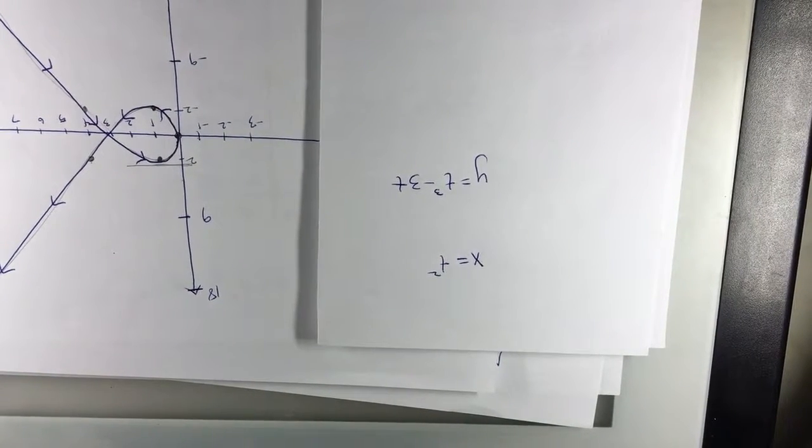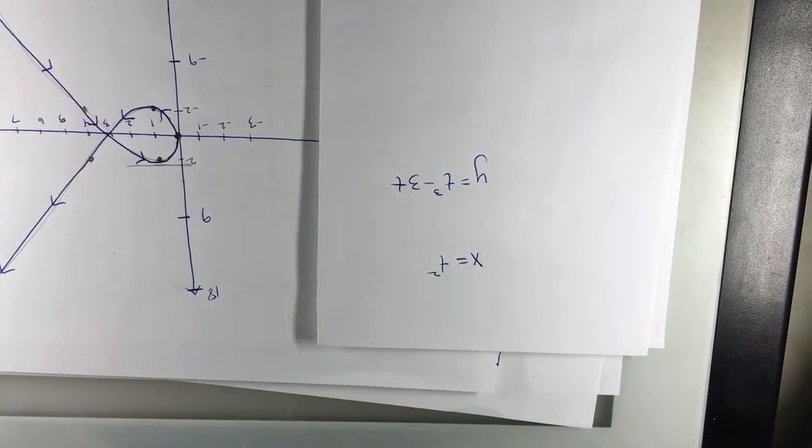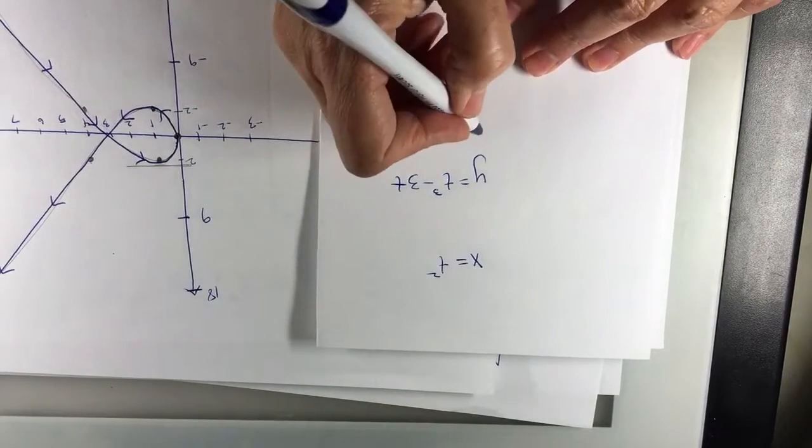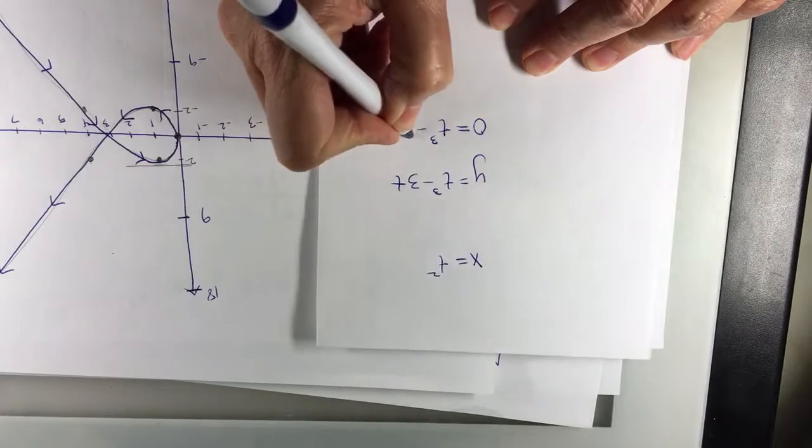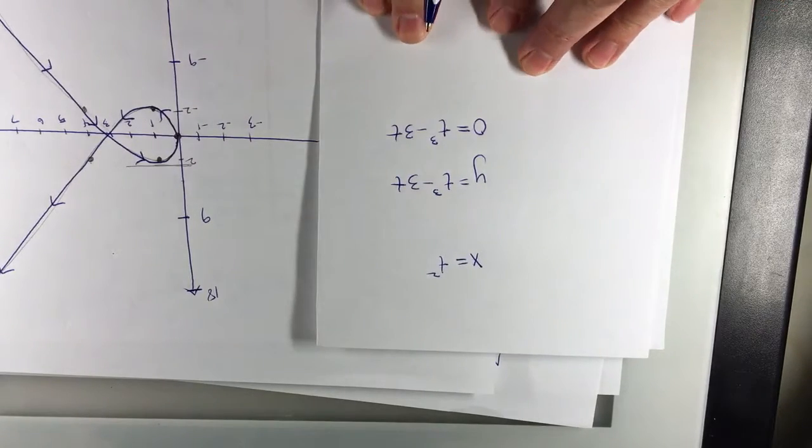For the x-intercept, y is going to be 0, so I can plug 0 in for y and solve this equation for t.